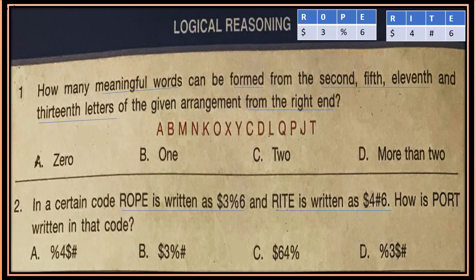Question 1: How many meaningful words can be formed from the 2nd, 5th, 11th, and 13th letters of the given arrangement from the right end? Start from the right end, write down the 2nd, 5th, 11th, and 13th letters, and then find how many meaningful words can be formed from these letters. Calculate.